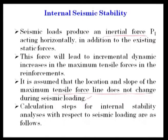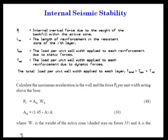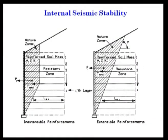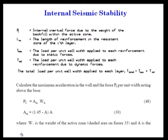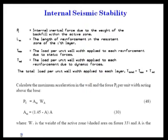The calculation steps for internal stability analysis with respect to seismic loading are as follows. PI is the internal inertial force due to the weight of the backfill within the active zone. LEi is the length of reinforcement in the resistance zone. T_max is the load per unit wall width applied to each reinforcement due to static forces; TMD is the load due to dynamic forces.